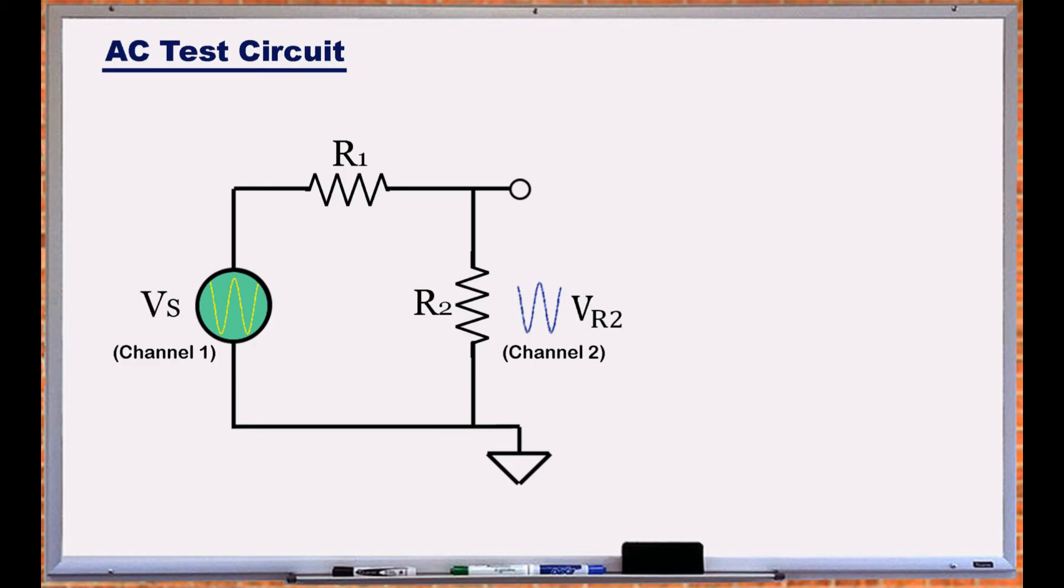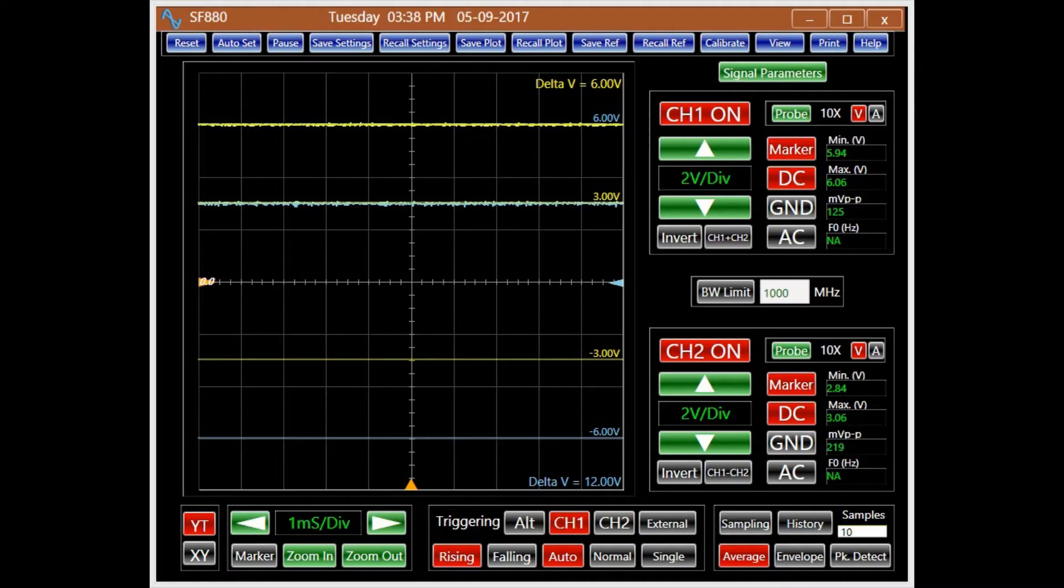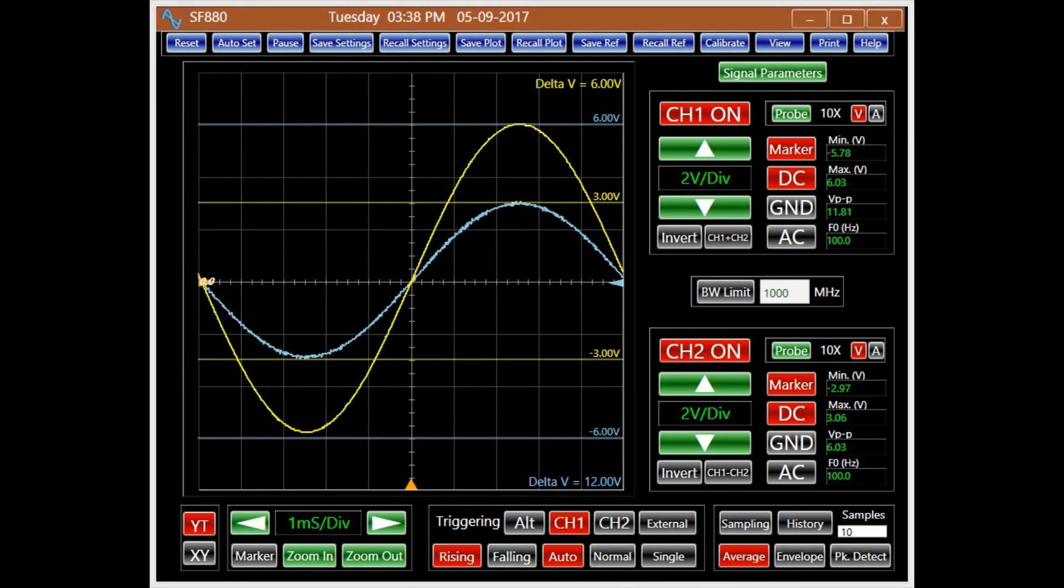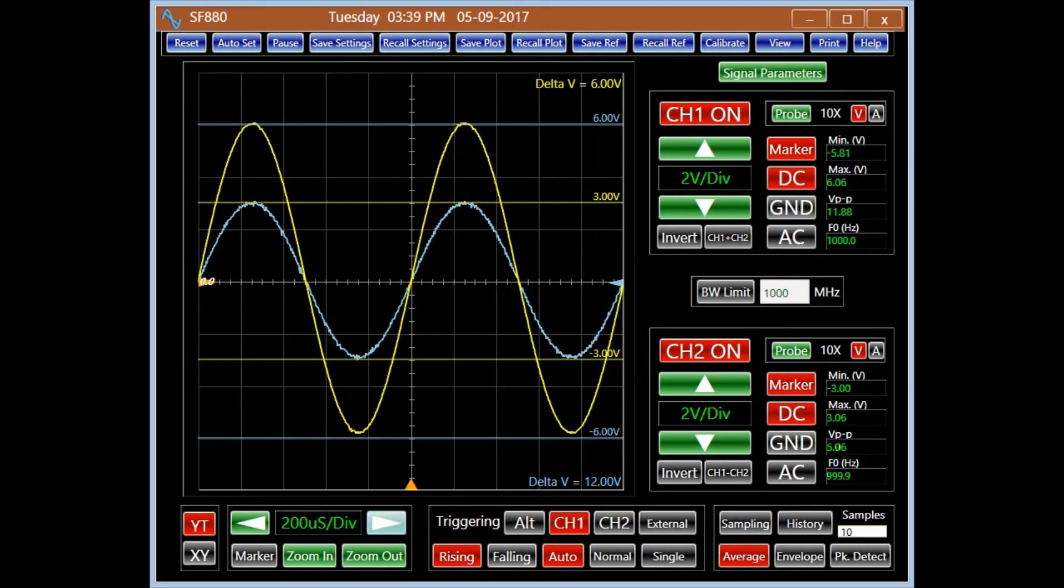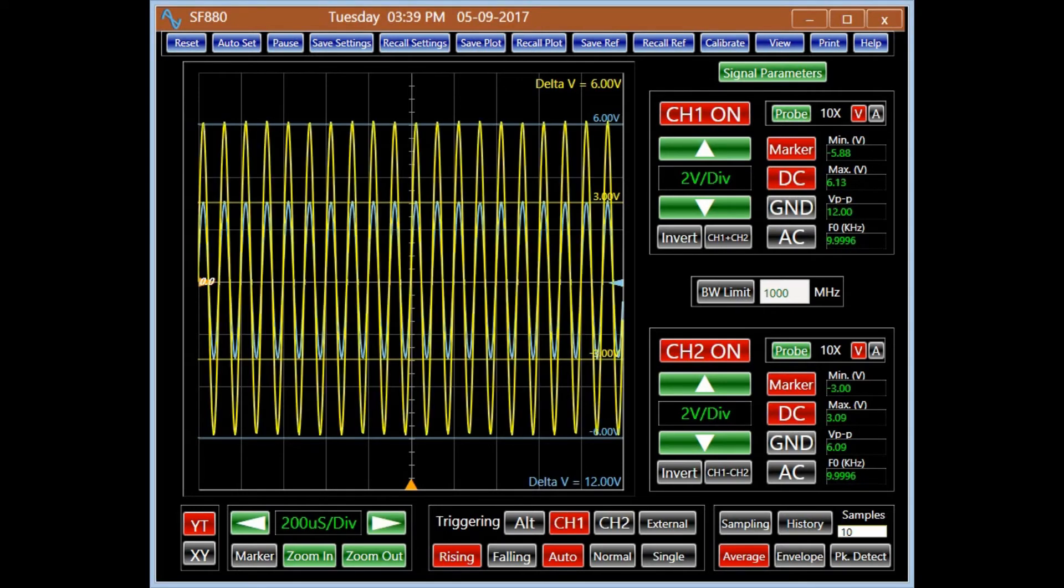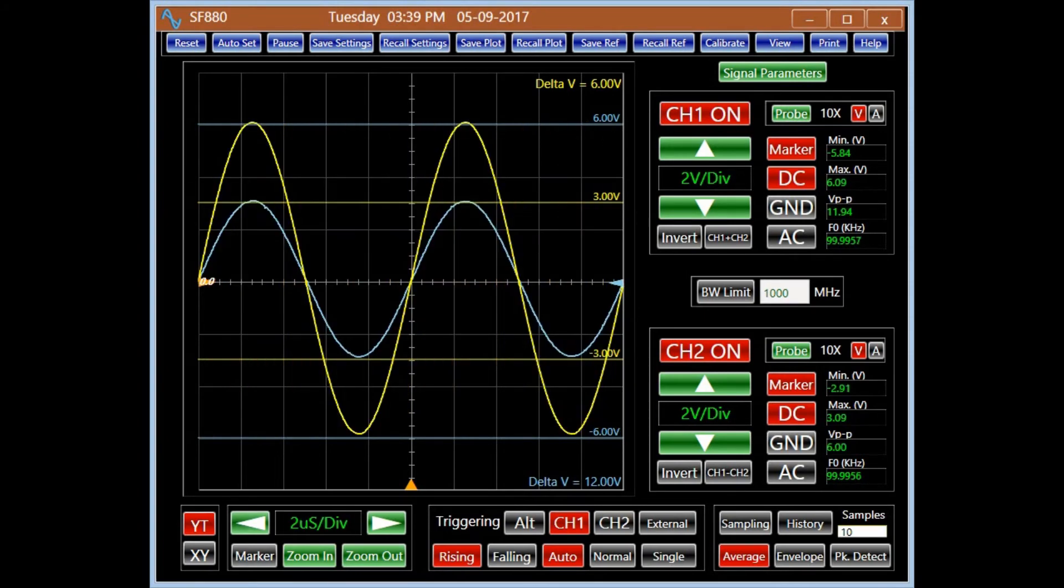Now let's connect Vs to a sine wave signal. Using an analog ARTS SF-880 oscilloscope, we monitor Vs on channel 1 in yellow and VR2 on channel 2 in blue while increasing the signal frequency. Channel 1 and 2 signals are always in phase; resistance does not affect the phase of the current in an AC circuit, and the AC amplitude of VR2 remains constant.